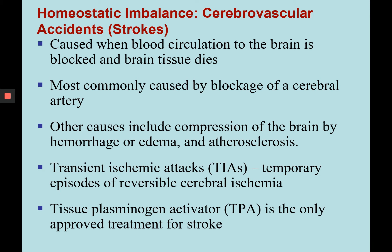Another homeostatic imbalance is cerebrovascular accidents, better known as strokes. Strokes occur when blood circulation is blocked to the brain, and brain tissue dies because it can't get nutrients or oxygen. The brain tissue is very intolerant of ischemia. The most common cause is a blockage of a cerebral artery, though hemorrhage, edema, or atherosclerosis in a cerebral artery can also cause strokes. Transient ischemic attacks are temporary episodes of reversible cerebral ischemia. A common treatment is tissue plasminogen activator, which treats the clot to reverse or prevent further stroke symptoms.